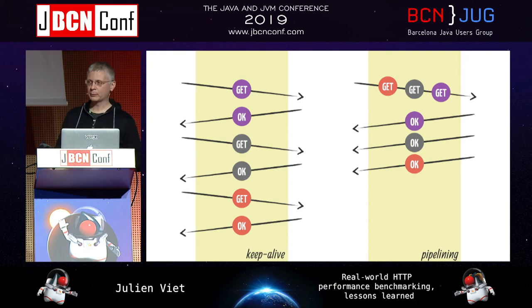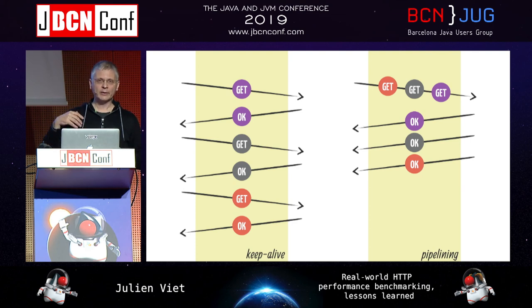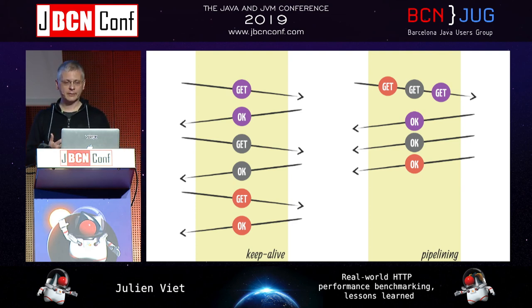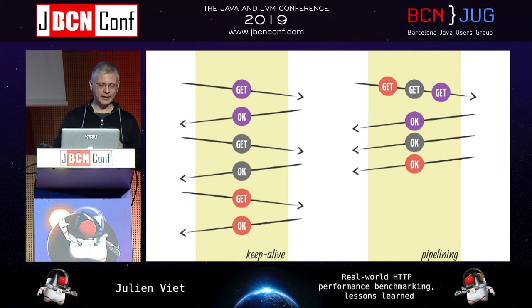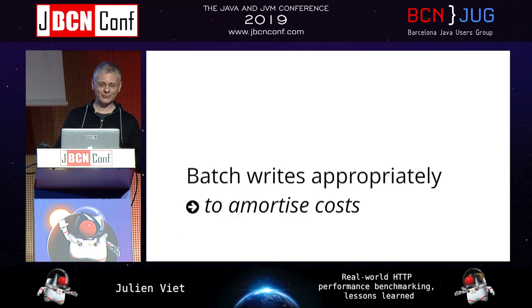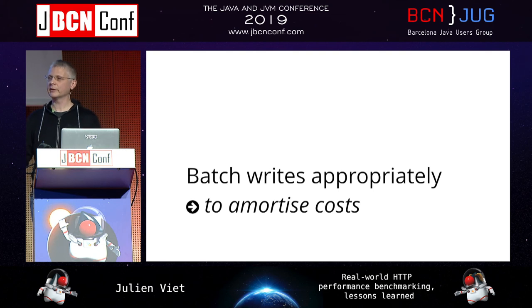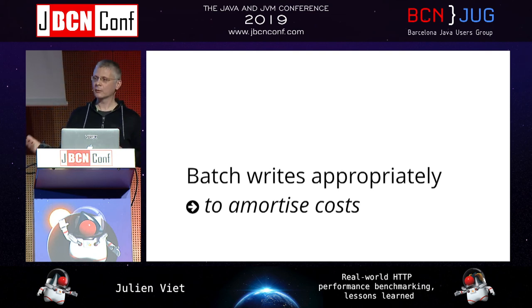Let's start with the plaintext benchmark. In this benchmark, it's a simple Hello World — the application really does nothing but send Hello World. What's important is that it uses HTTP pipelining. The test takes between 256 connections up to 6K connections. You make benchmarks with all these connections, retain what is the best, and that best result becomes your benchmark result. It's really only the client and the server.